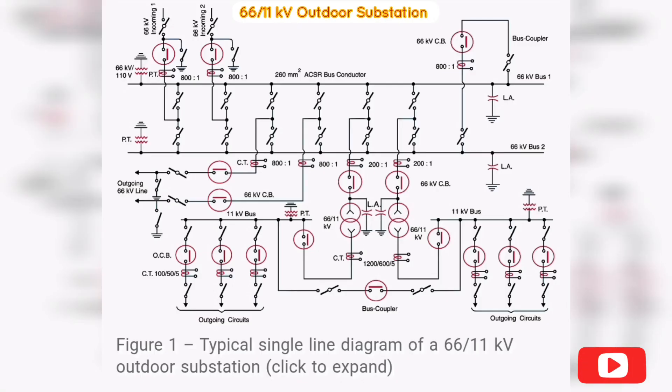Next, we learn about the 66 kV/11 kV outdoor substation single line diagram. Figure 1 shows the single line diagram of a typical 66 kV/11 kV substation. Let's explain the main parts of it and how it actually works.